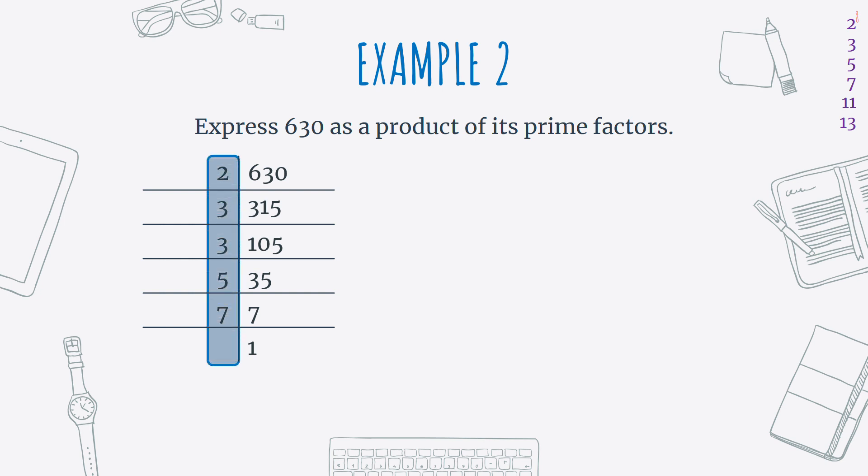So here are my prime factors. And again, I'm going to write 630 is equal to 2 times 3 times 3 times 5 times 7. And I'm going to simplify these here, because 3 times 3 I know is 3 squared. And that's my final answer.